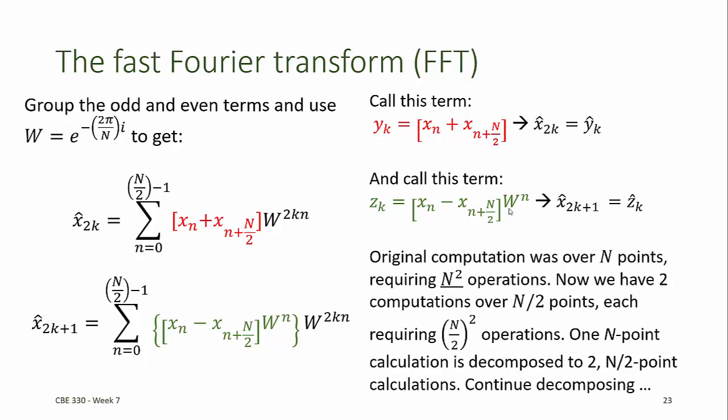Now our original computation that was over n points requiring n squared operations is now two separate computations over n by 2 points, each requiring n by 2 squared operations. One n point calculation is decomposed to two n by 2 point calculations. Then we can continue this decomposition for each of the sub-segments.